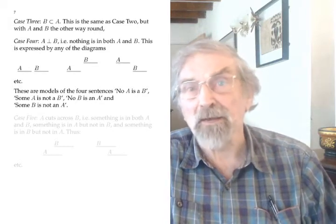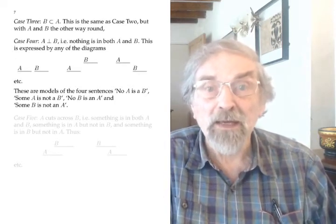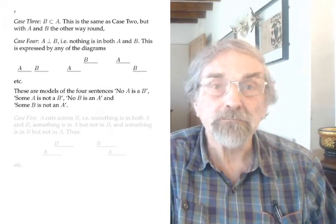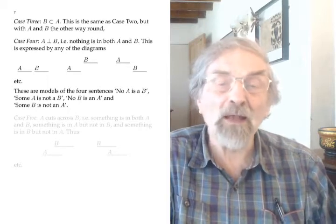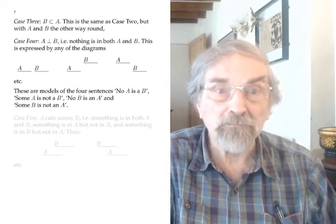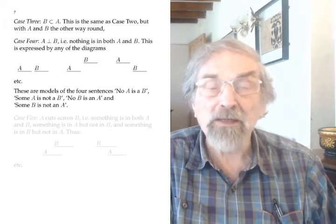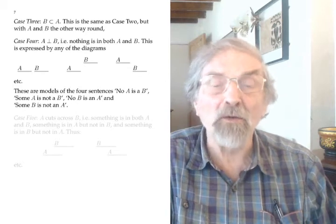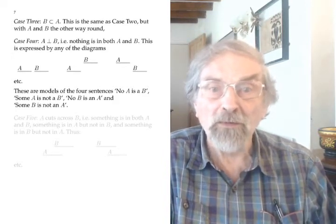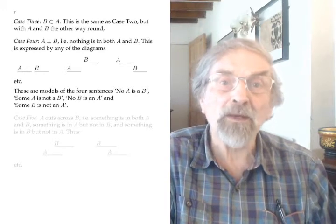The third case is exactly the same as the second case except the letters are the other way round — B is a proper subset of A, meaning every element of B is an element of A but not vice versa. The fourth case is that no element of A is an element of B — equivalently, no element of B is an element of A; the set theorists describe this as A and B being disjoint. These diagrams have no overlap between the A line and the B line, and each is a model of 'No A is a B,' 'Some A is not a B,' 'No B is an A,' and 'Some B is not an A.'